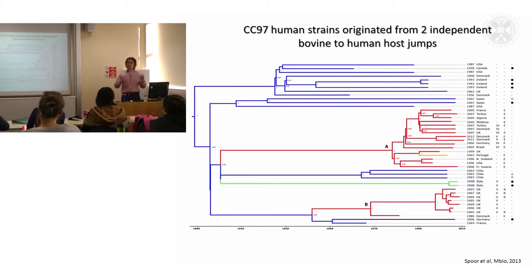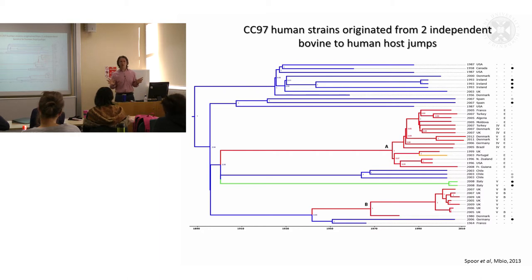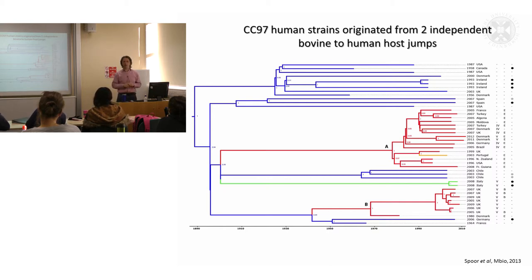This indicated to us for the first time that cows can be a reservoir for new strains of Staph aureus which can colonise and spread in human populations. That's probably something we need to be aware of, and we should have some kind of effective surveillance to try and spot these events when they happen.